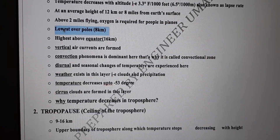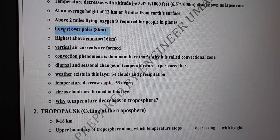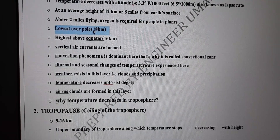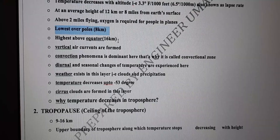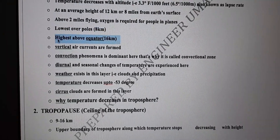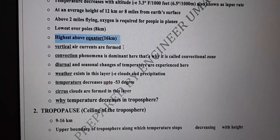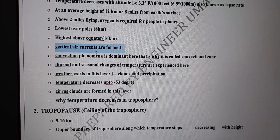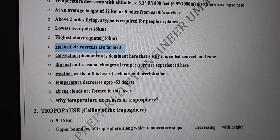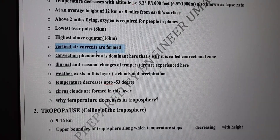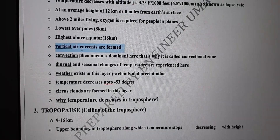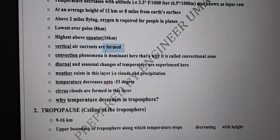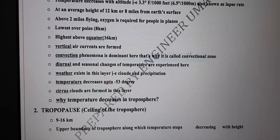The troposphere is 8 kilometers over the poles and can go up to 16 kilometers over the equator. This is attributed to the change in temperature. Vertical air currents — meaning movement of air vertically — are observed in the troposphere.